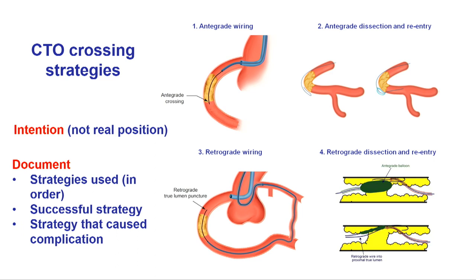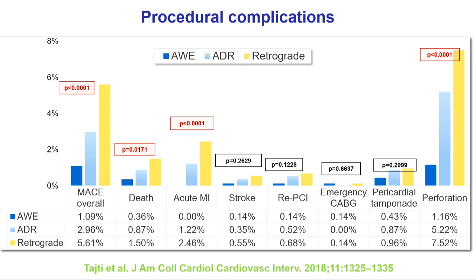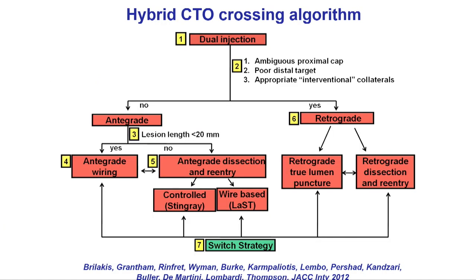The first algorithm was the hybrid algorithm, putting order on CTO approach starting with dual injections, then deciding antegrade or retrograde based on angiographic analysis. This evolved with the Asia-Pacific algorithm adding parallel wiring and IVUS-guided proximal cap puncture. The Euro-CTO Club had very similar basic tenets. Based on this, an effort was made to merge all algorithms into one globally accepted blueprint — the Global CTO Crossing Algorithm, published in JACC — summarized as 10 steps with broad appeal.